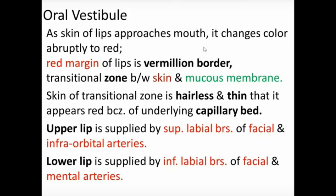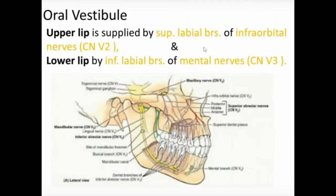The upper lip is supplied by the superior labial branches of the facial artery and the infraorbital artery, whereas the lower lip is supplied by the labial branches of the facial artery and the mental artery. So there are two arteries supplying each lip.